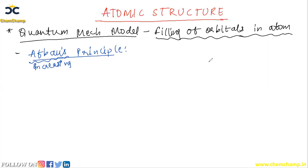The first concept is the relative stability of orbitals, also called the n plus l rule. The second is the Pauli Exclusion Principle, and the third is Hund's Rule of Maximum Multiplicity, or simply Hund's Rule. Let's start with the first one, the n plus l rule.